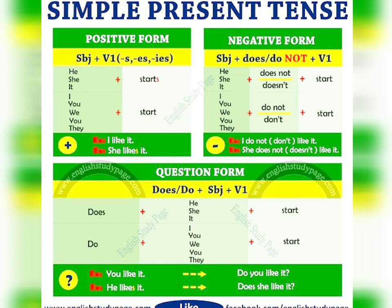In negative sentences, does is used for singular subjects and do is used for plural subjects. When the subject is he, she, it, or any singular noun, you use 'does not.' When the subject is I, we, you, they, or any plural noun, you use 'do not.' In interrogative sentences, write does at the start for a singular subject and do for a plural subject. The rest of the structure remains the same, and at the end you put a question mark.